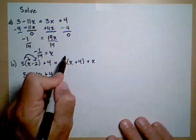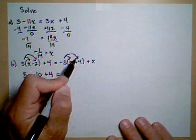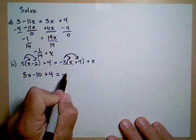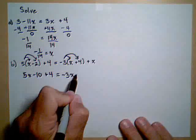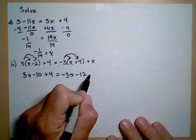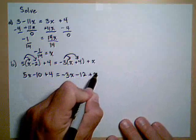Now we'll distribute the negative 3 to the x and the 4. So that gives us negative 3x minus 12 plus x.